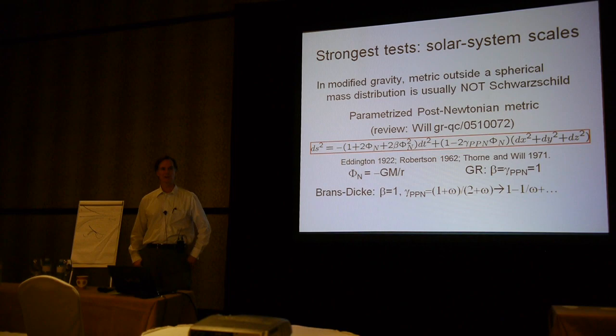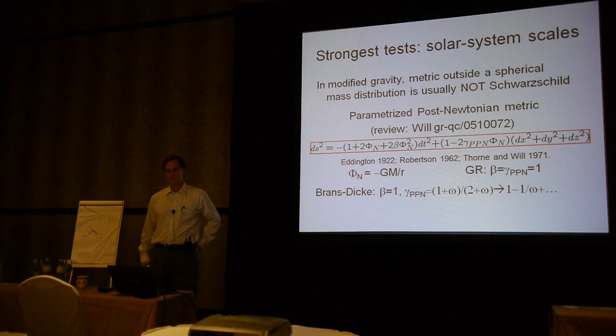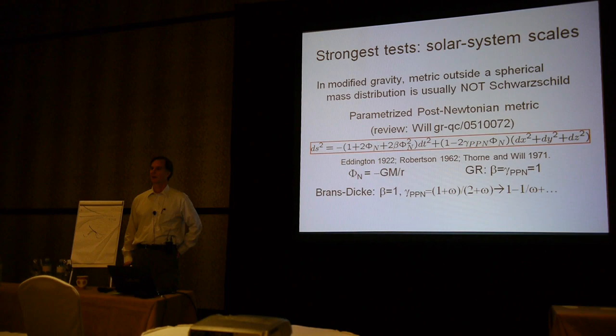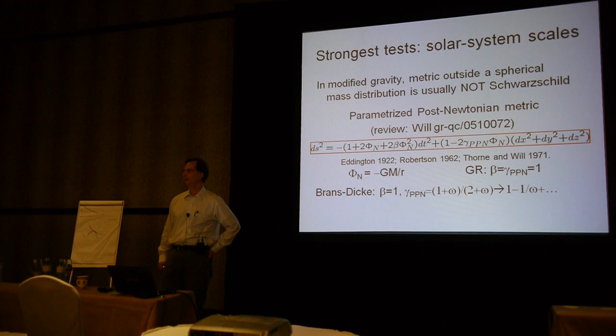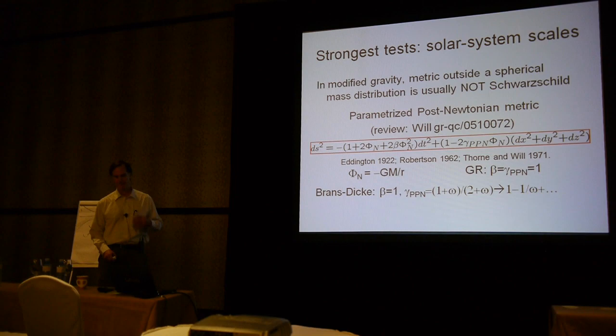The strongest tests come not on cosmic scales but on solar system scales, owing to high precision measurements by laser ranging, planetary radar, and so forth. In modified gravity theories, the metric outside a spherical mass like the Sun is usually not the Schwarzschild metric—the Birkhoff theorem of general relativity does not hold for modified gravity theories. One can write the metric in a weak field approximation in a parameterized form going back to Eddington, motivated by his tests of general relativity using gravitational lensing.